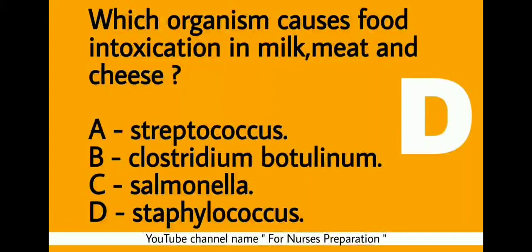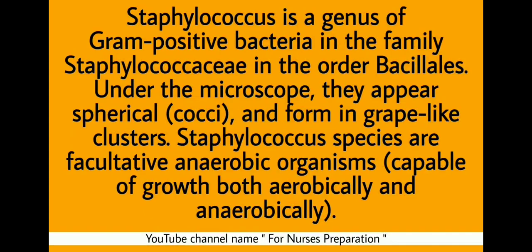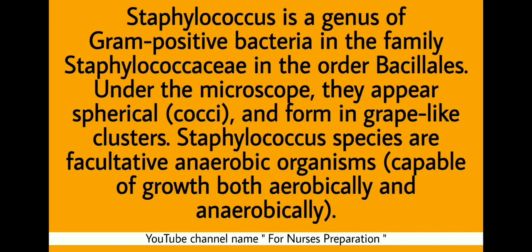Which organism causes food intoxication in milk, meat and cheese? The right answer is Staphylococcus. Staphylococcus is a genus of gram-positive bacteria in the family Staphylococcaceae. Under the microscope they appear spherical and form grape-like clusters. Staphylococcus species are facultative anaerobic organisms, meaning they are capable of growth both aerobically and anaerobically.